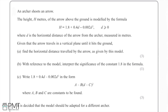In this question, we're given that an archer shoots an arrow and the height, denoted by h and measured in meters, of the arrow above the ground is modelled by the formula h = 1.8 + 0.4d − 0.002d², where d is the horizontal distance of the arrow from the archer, also measured in meters, and d is greater than or equal to zero, which makes sense as distance must always be non-negative.